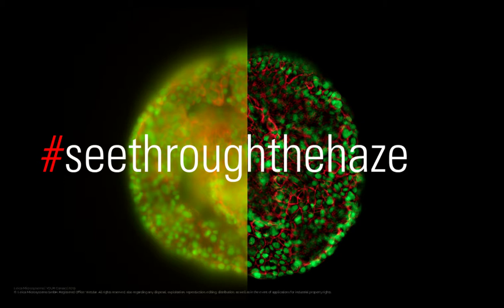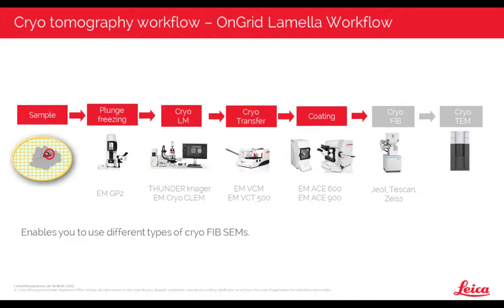Can this workflow be combined with the VCT 500 from Leica? Yes — as shown in the flexible workflow, the VCM system is the vacuum cryo manipulation station, and a rod attaches to the VCT, which is the vacuum cryo transfer system with a little dewar inside that transfers the sample under cryogenic conditions. As soon as you attach the VCT to the VCM, you can monitor the temperature and vacuum state of your sample during transfer, so you're always sure of the sample's condition.